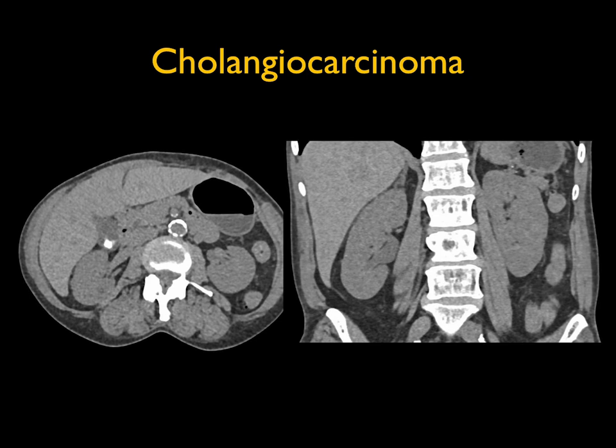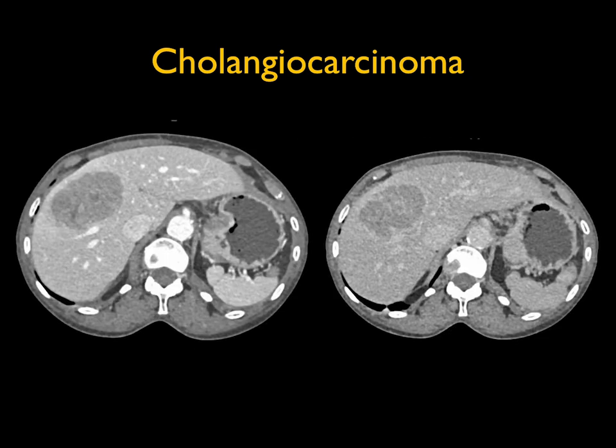Case 1 was a cholangiocarcinoma. On the non-contrast scans there's not a whole lot to see and no evidence of cirrhosis of the liver. On the arterial mapping and on the late venous you can see about a seven centimeter mass in the right lobe of the liver. It's mildly vascular but not hypervascular, and it doesn't change much between arterial and delayed or venous phase imaging, though it does seem to have a slightly enhancing rim.